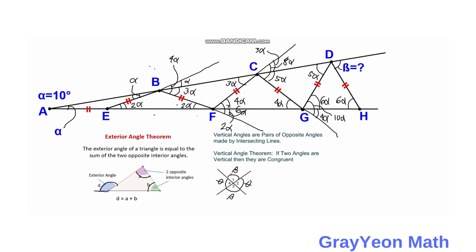For the next step, we extend segment DGH to form an exterior angle. This exterior angle measures 6 alpha plus 6 alpha, which is 12 alpha. We notice that the adjacent angle is a vertical angle with angle CDG, which is 5 alpha. For the final step, we subtract the vertical angle from the exterior angle: 12 alpha minus 5 alpha, which gives us 7 alpha.